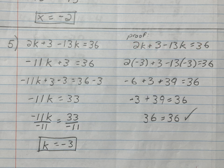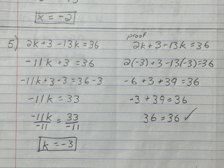Let's check it. Rewrite the original equation untouched, then on the next line do it exactly the same except everywhere there was a variable, put parentheses with the value. So: 2(-3) + 3 - 13(-3) = 36.